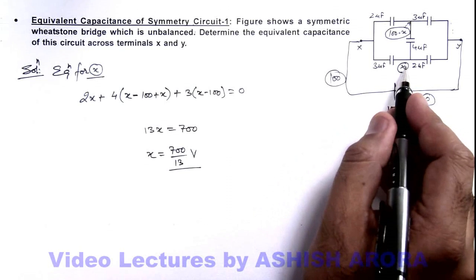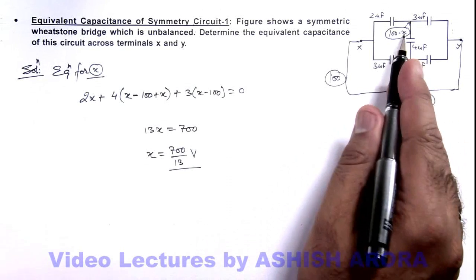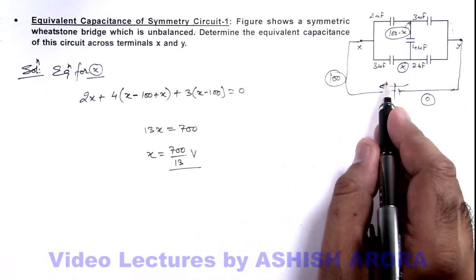That is the potential of this node x. So if we have got the value of x, we can find out the amount of charge which is flown through the battery.